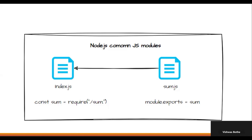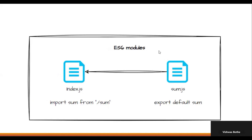Now let's understand the latest ES6 modules. In ES6 modules things are similar, but the way of exporting and importing is different. For export, we use the 'export' keyword and specify the component or function. In index.js, we import that function as a default or named export.